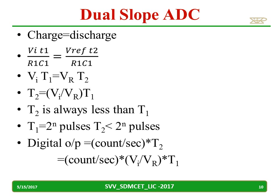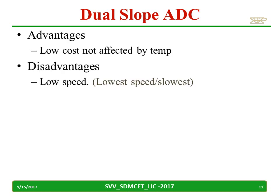This is the charge-equal-to-discharge equation from which the digital output equation is derived — you can glance at it once. The advantages are low cost and it is not affected by temperature. The disadvantage is low speed. Compared to other ADCs, the dual slope A to D converter has very low speed — it is considered a slow ADC.